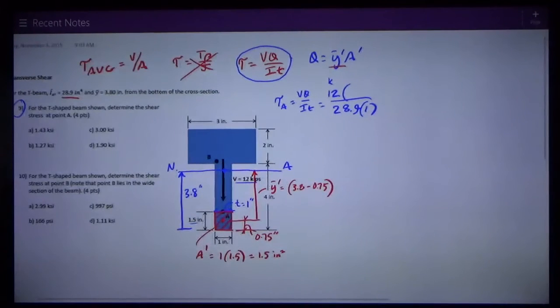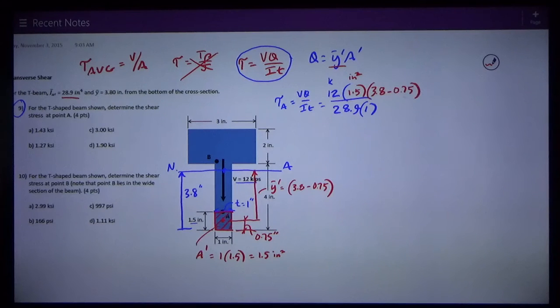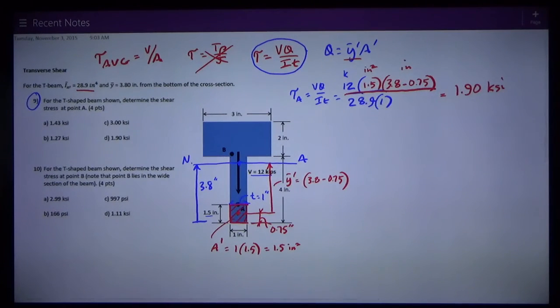So now I can plug into the formula. A prime, let me write that first as 1.5. That's inches squared. And then Y bar prime is that 3.8 minus 0.75, that's in inches. There's my calculation. I do the math and I get 1.90 KSI. And that is answer D.